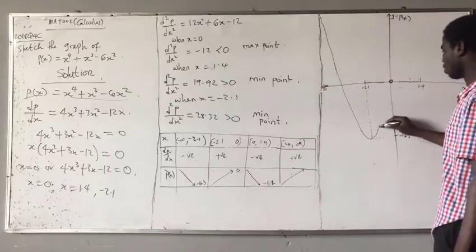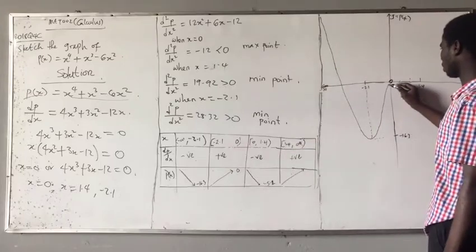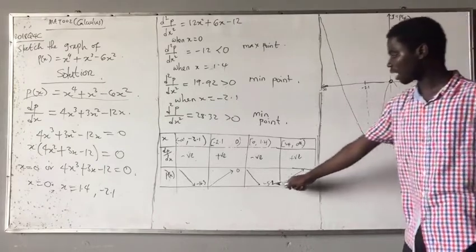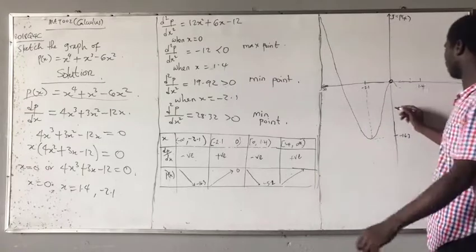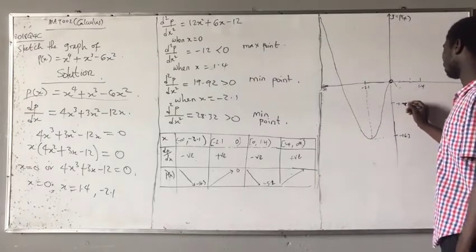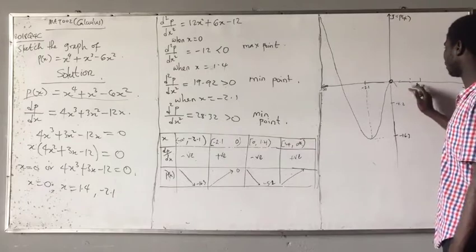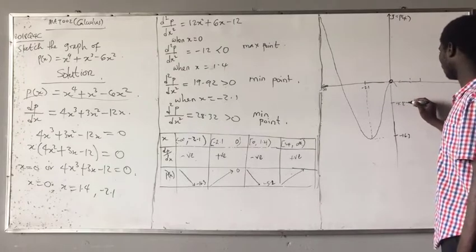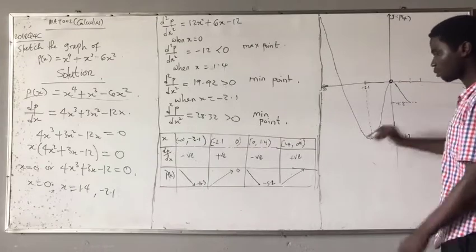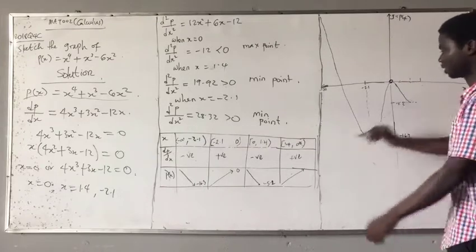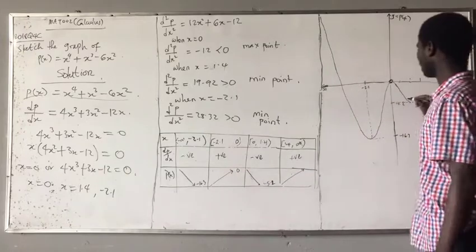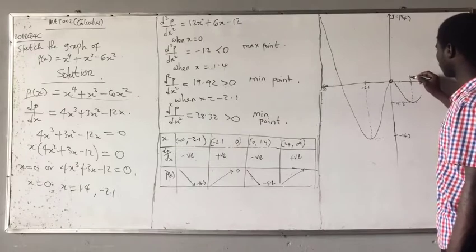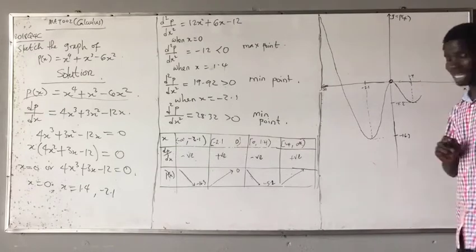This is how the function will look like: it comes down to minus 5.2 at point 1.4, then it will come down again. When it gets to minus 5.2 it will go up again. That means this place that is going up, this place is 1.4. Do you understand? So that's how it will be.